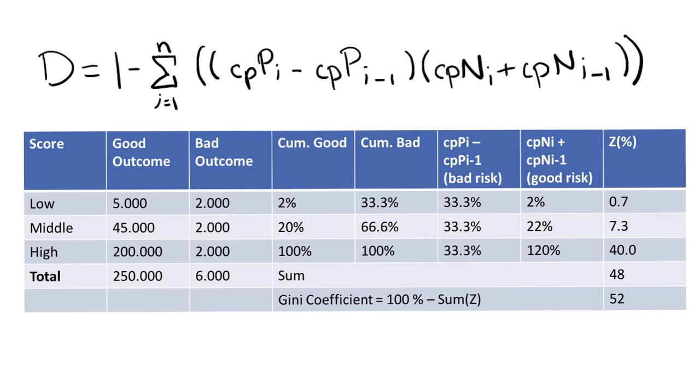But in this case, since the number of bad customers is the same for all three credit scores, the cumulative bad scores are 33.3%, 66.6%, and 100%. Then we calculate the cumulative bad score of each row minus the cumulative bad score of the previous row. So for example, here in the first row, we get the value of 33.3% because it's the first row. And in the second row, we get 66.6 minus 33.3, which is 33.3%. And in the third row, we have 100 minus 66.6%, which is roughly 33.3% as well.